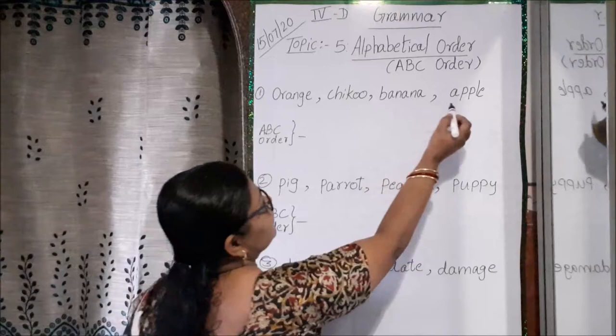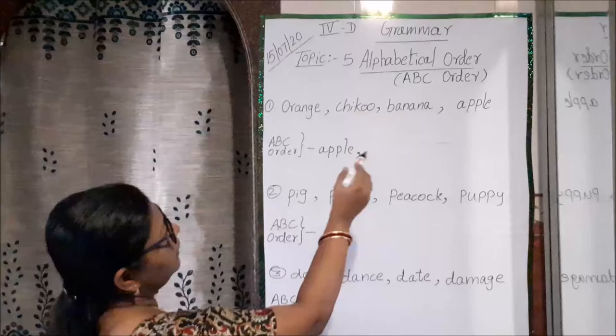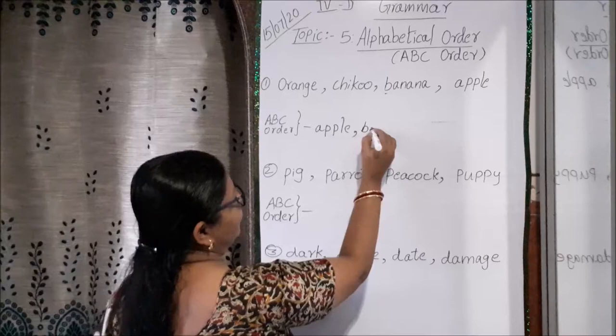So in this, which is the first letter A, so this word apple should be written first. Apple, then after that, after apple, is there any word beginning with B? Yes, here, see B. So we will write then banana, banana is the next word, correct? Okay.